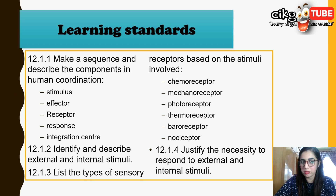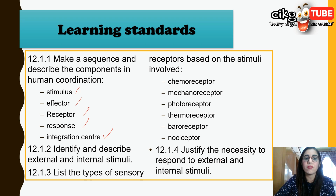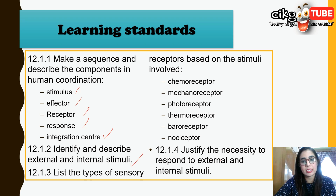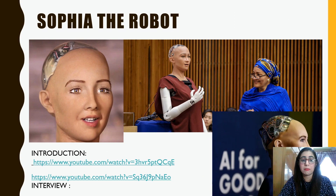As usual, let's look at the learning standards. 12.1.1 — make a sequence and describe the components in human coordination. We have stimulus, effector, receptor, response, and the integration center, shown in a flow map. We will also identify and describe external and internal stimuli, list the types of sensory receptors based on stimuli — chemoreceptors, mechanoreceptors, photoreceptors, thermoreceptors, baroreceptors, and nociceptors — and justify the necessity to respond to external and internal stimuli.